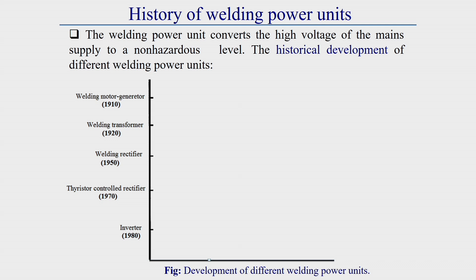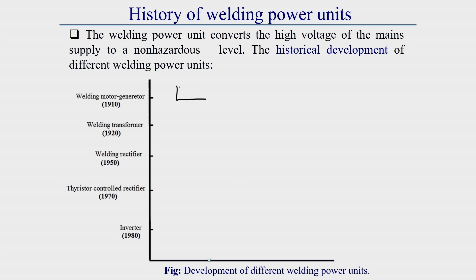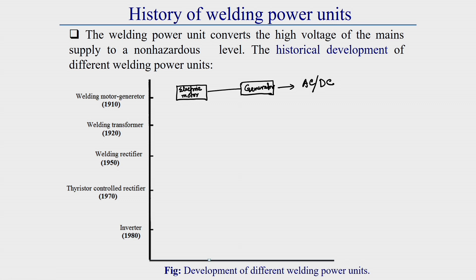The first welding power unit was developed in 1910 — a welding motor generator. It consists of an electric motor directly coupled to a generator, producing either AC or DC current depending on the generator type.